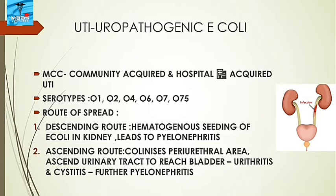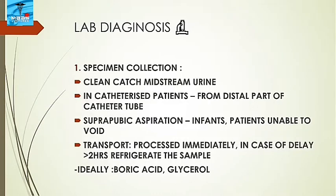In the ascending route, E. coli colonizes the periurethral area, then ascends the urinary tract to reach the bladder, causing urethritis and cystitis. Further ascent leads to pyelonephritis.